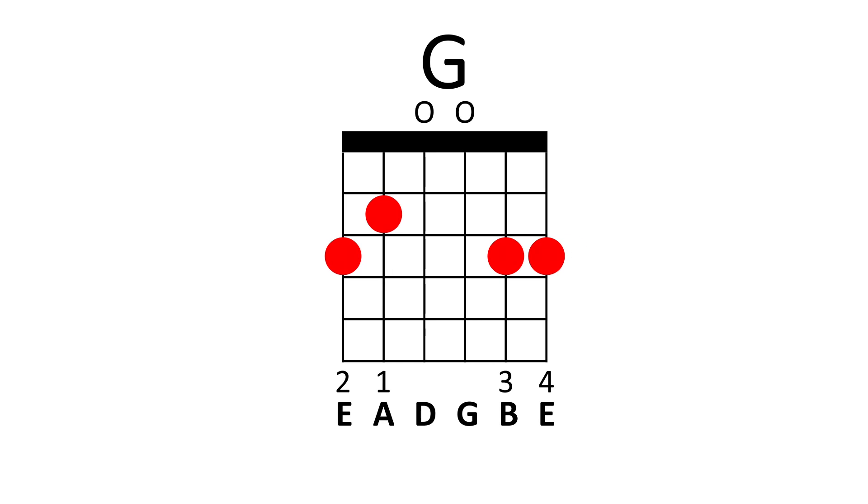Now let's check out the G major. So G major, in this shape over here, we have a G note on the sixth string, a B note on the fifth string, a D note on the fourth string, G note on the third string, a D note on the second string, and another G note on the first string.